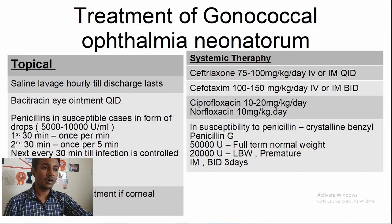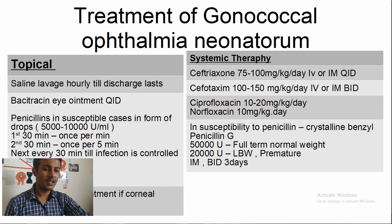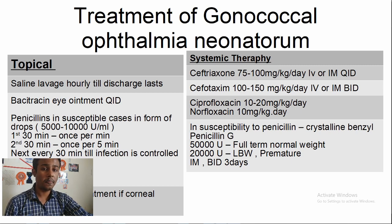Treatment of gonococcal Ophthalmia Neonatorum is of high importance. You have both systemic and topical antibiotic options. Eye drops help to clear the discharge. For penicillin-susceptible cases, drops of 5,000 to 10,000 units/mL can be given — though resistance has developed and penicillin may not be reliable. Atropine sulfate is given in case of corneal involvement — not curative, but helps reduce pain. Systemic therapy includes ceftriaxone, cefixime, ciprofloxacin, norfloxacin, and penicillins.